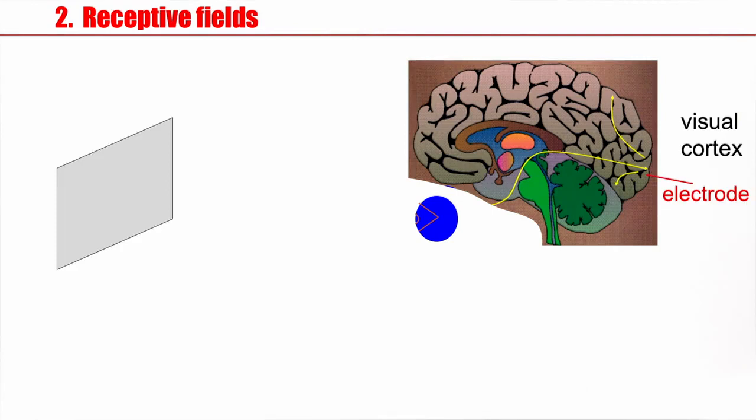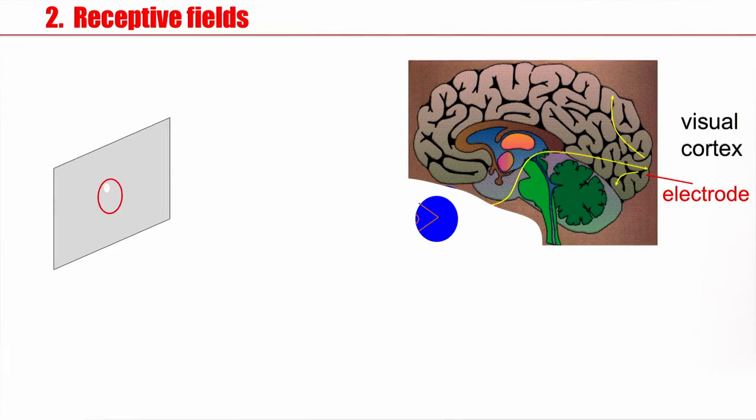So suppose your experimental colleague puts in an electrode in the cortex in an area that's called visual cortex, while on the screen light dots appear. So these light dots appear at different locations and what you will find is that whenever the light dot enters a small region, then the activity of this neuron changes. It might, for example, increase.